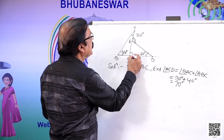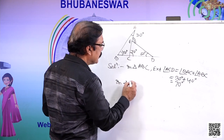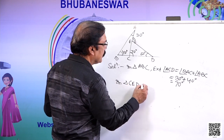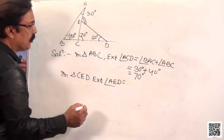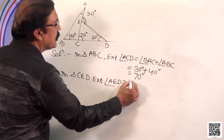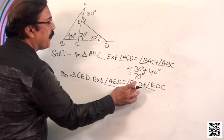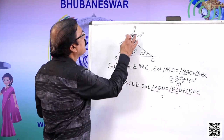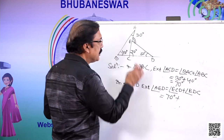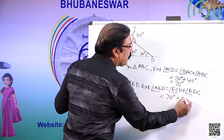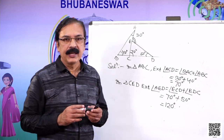Now, angle ACD is 70 degrees. In triangle CED, the exterior angle AED is equal to the interior opposite angles ECD plus EDC. Angle ECD is the same as angle ACD, that is 70 degrees. And angle EDC is given to be 50 degrees. So angle AED is 70 plus 50, which is 120 degrees.